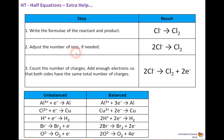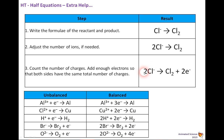For higher tier, here is extra help with balancing half equations. First, write the formula of the reactant and product — for example, Cl⁻ → Cl₂. Next, adjust the number of ions if needed: clearly 1 Cl⁻ cannot make Cl₂, so we write 2Cl⁻ → Cl₂. Then count the number of charges and add enough electrons so that both sides have the same total charge. On the left: −1 × 2 = −2; on the right: 0. So we need 2 electrons (2e⁻) on the right side.